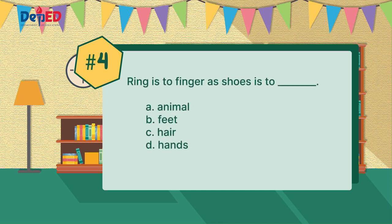For number four: ring is to finger as shoes is to blank. Is it letter A, animal? B, feet? C, hair? D, hands?